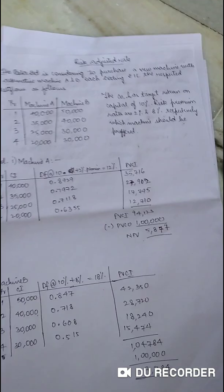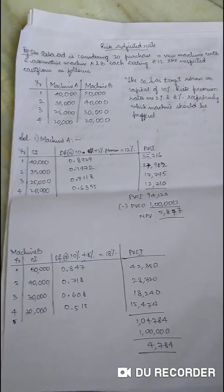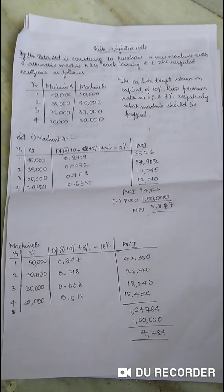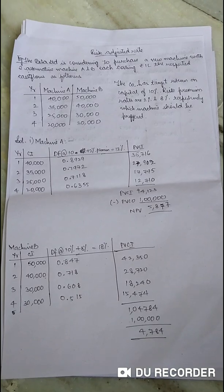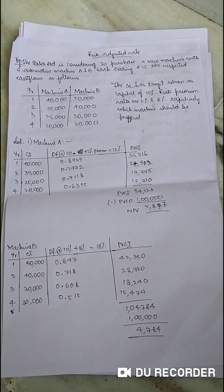So taking one of the examples, let us understand what this method is about. Now what do you mean by risk-adjusted rate? This is nothing but when an investor is making an investment which is risky, along with calculation of the present value we will also be adding up a premium amount or a premium discount rate while calculating.